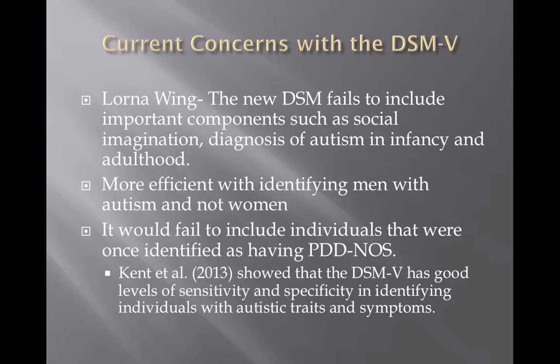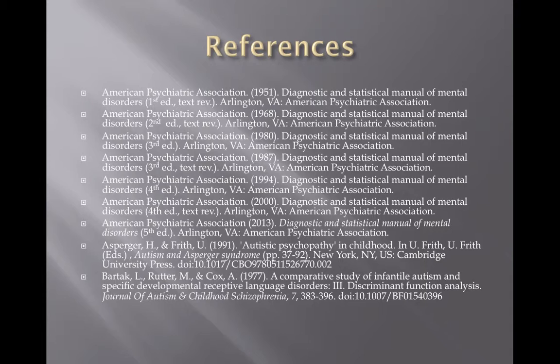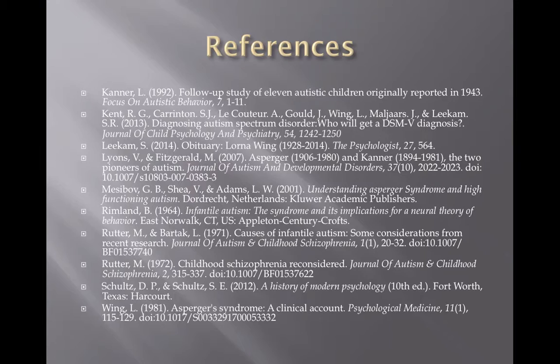However, Lorna Wing and other psychologists still have some problems with the DSM-5. Lorna Wing believes it fails to include important components such as social imagination, diagnosis of autism in infancy and adulthood, and that it is more efficient at identifying men with autism as opposed to women. Some also believe it might fail to identify individuals that were once identified as having PDD-NOS. However, recent research has dismissed this point, saying that the DSM-5 has a good level of specificity and sensitivity in identifying individuals with autistic traits and symptoms. There were a lot of changes throughout the 1900s to explain the history of Autism Spectrum Disorder, but there are still some concerns. Given what we know about history, it's only a matter of time before we see more changes made to the DSM-5.